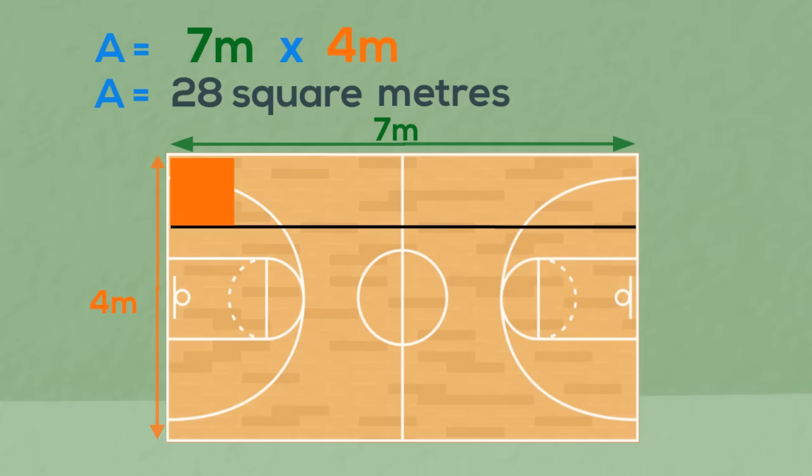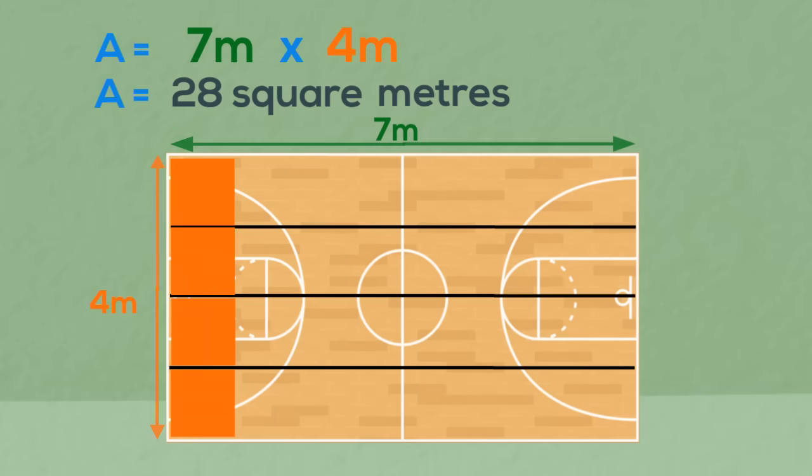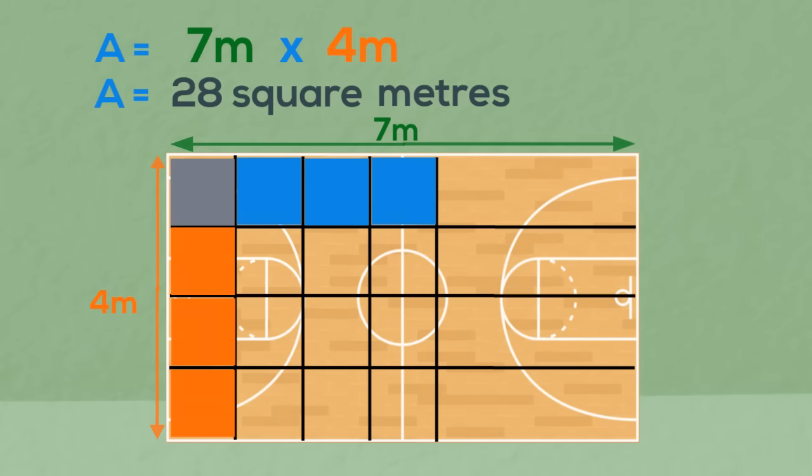We know that we have four rows, each with seven squares. Seven times four. We can see that 28 squares fit perfectly over the area. So, the area is 28 square metres, or metres squared.